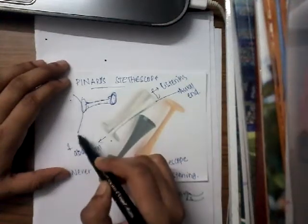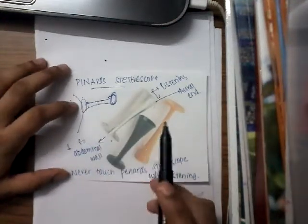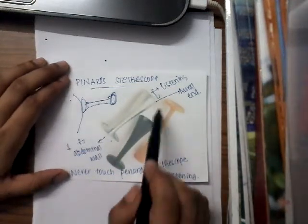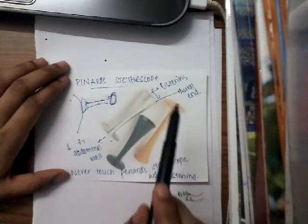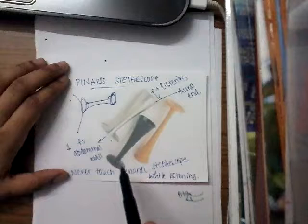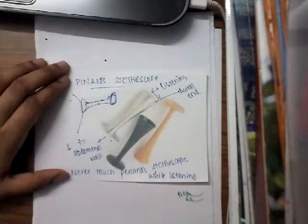on the abdominal wall. This flat end is put on the abdominal wall, and you will hear it with the help of this oral end. But never touch the Pinard stethoscope while you are listening, because if you touch it while listening, you cannot hear the proper heartbeat.